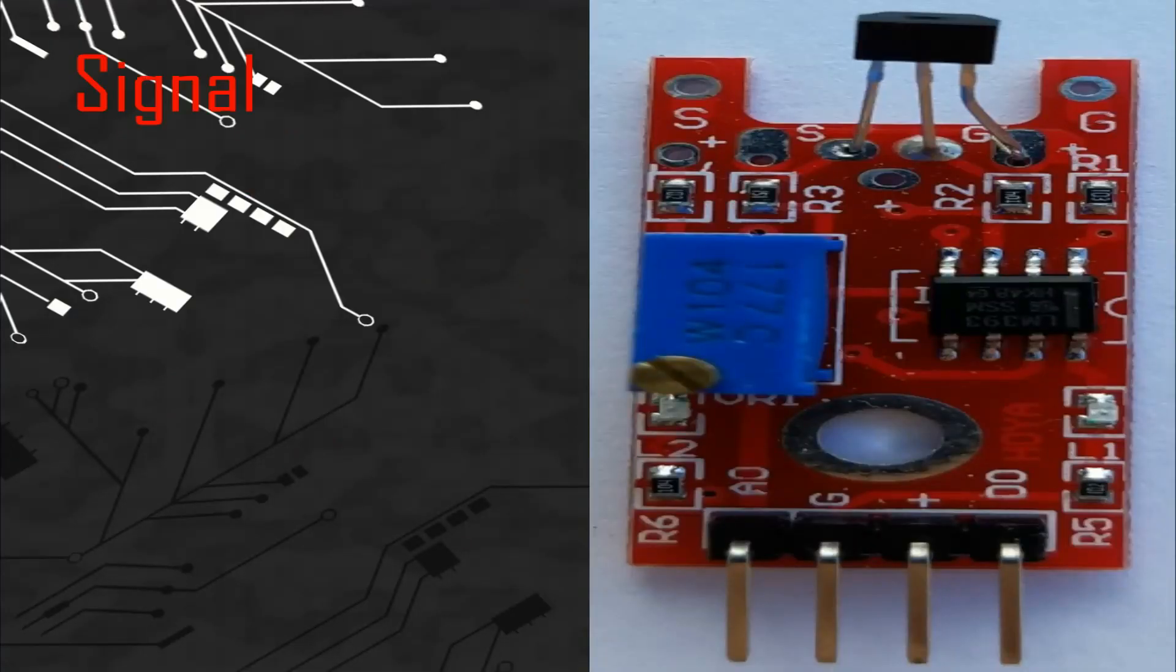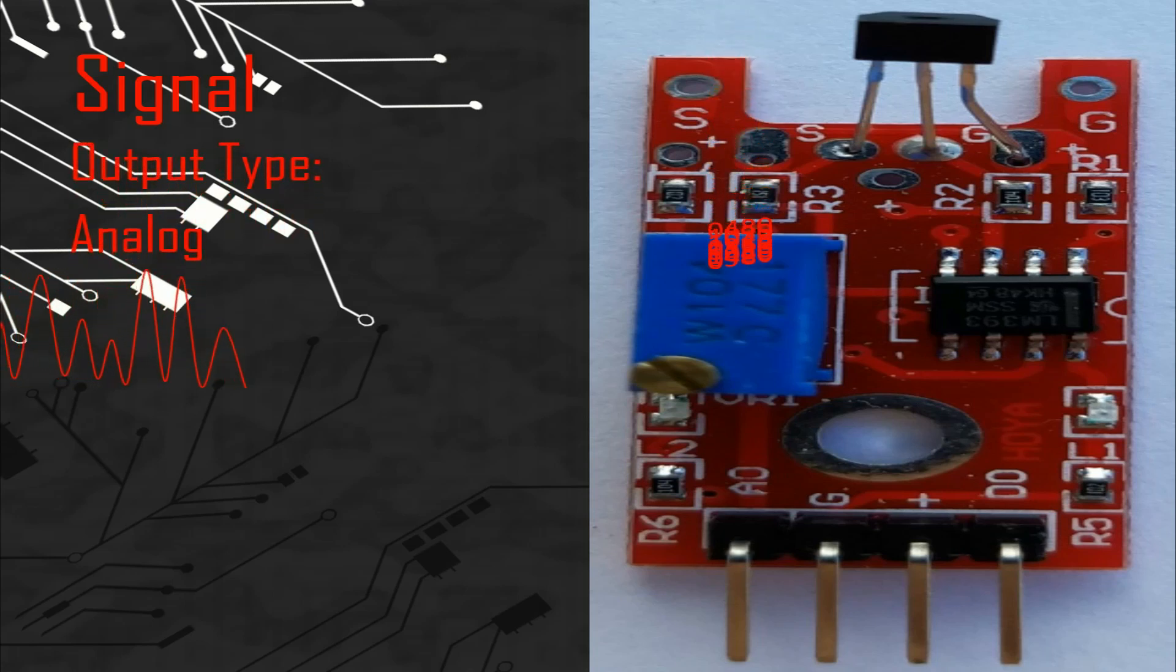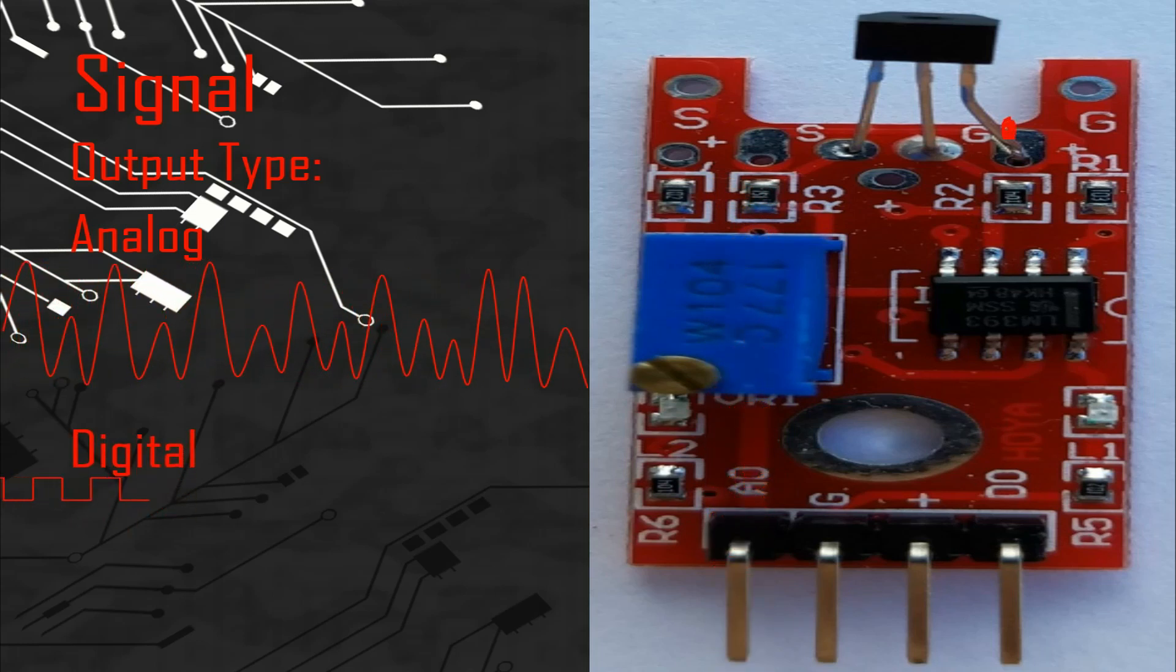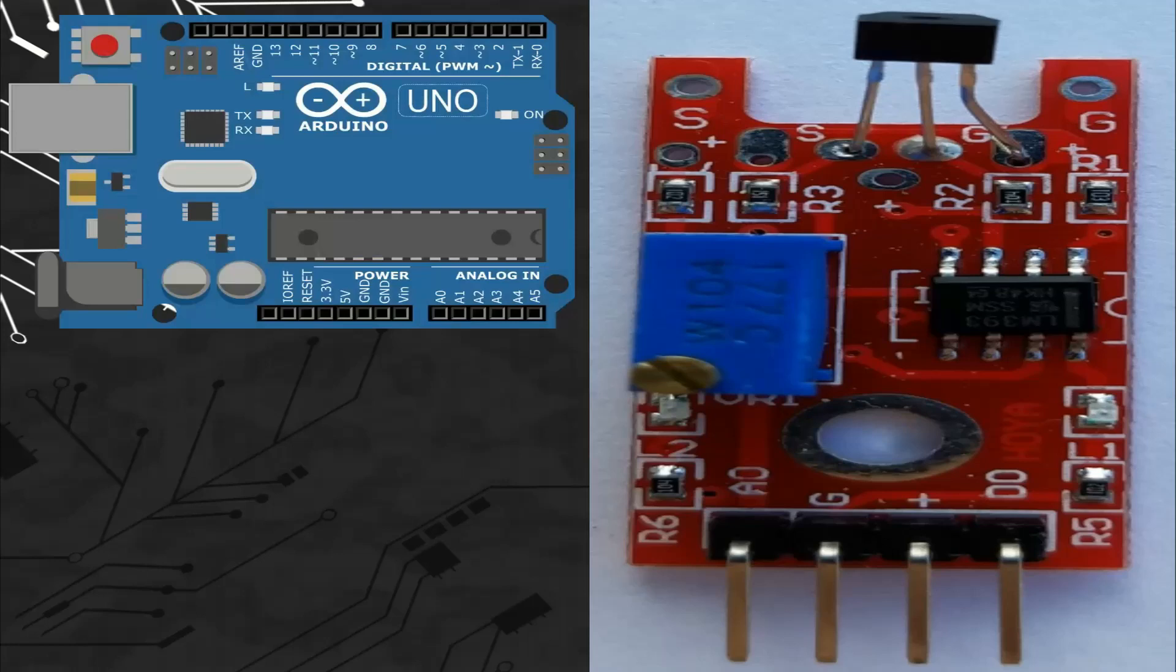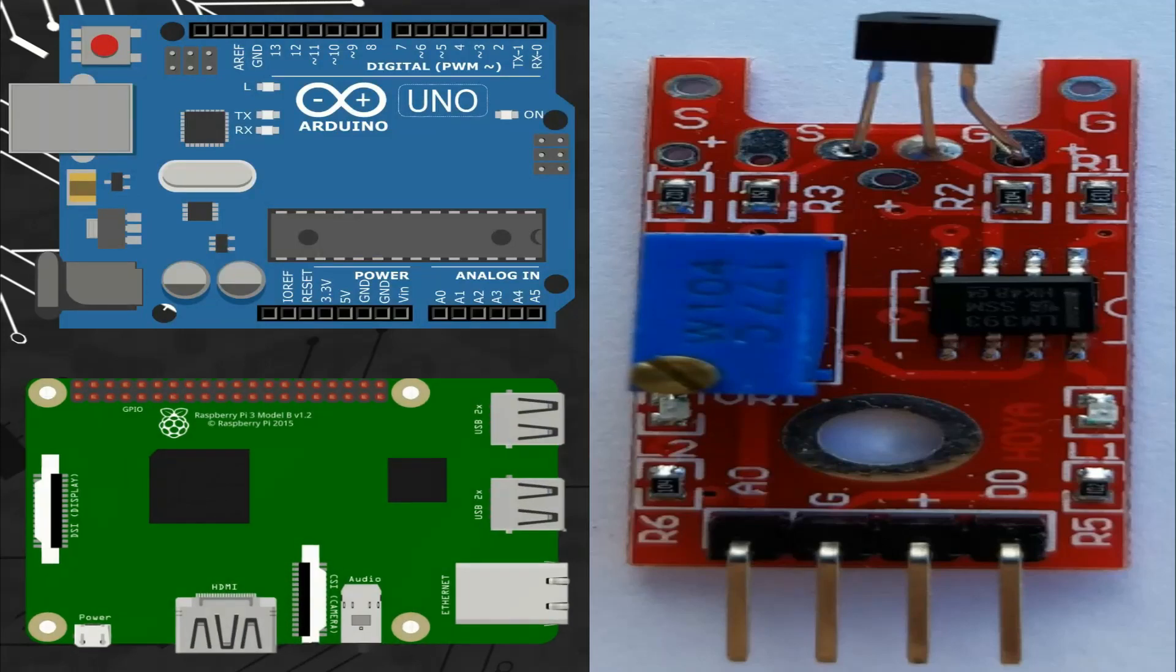So let's talk about the signals. This module gives two signals. We can connect the analog signal pin with any analog port, and the digital signal pin with any digital port of different microcontroller boards like Arduino or Raspberry Pi.